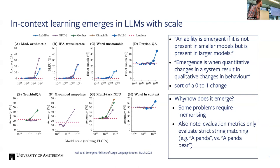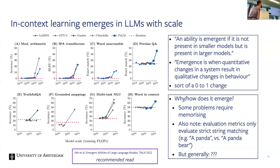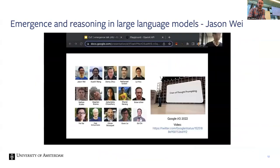It's actually not clear at all why this emergence happens. I'd recommend the paper on emergent abilities and the talk by Jason Wei from Google, who is something of a guru in this area.